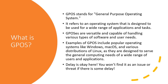What is GPOS? GPOS is a General Purpose Operating System. It refers to an operating system designed to be used for a wide range of applications and tasks — not just for one task. GPOS is very versatile and capable of handling various types of software and user needs. Simple examples of GPOS would be your Windows machine, Mac OS, and various distributions of Linux like Ubuntu. They are designed to serve the general computing needs of a wide range of users and applications. You can open a Word document, type, store, make a video, or run an application. If performing a task involves some delay, that delay is okay here.